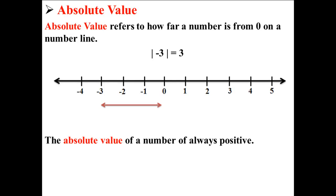The absolute value of any number is always positive. So for example, the absolute value of negative 3 is positive 3 and the absolute value of positive 2 is positive 2.